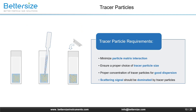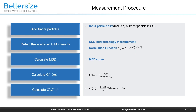When performing DLS microrheology measurements, the choice of tracer particles is very important. A key requirement is to minimize particle-matrix interactions, since any significant physical or chemical interaction between embedded tracer particles and their surroundings may alter the local environment and affect diffusivity. The tracer size used can have a significant effect on extraction of rheological parameters, and appropriate tracer concentration must be considered for good dispersion so that the scattered signal is dominated by the tracer particles. For the B-nano series, the first step is to input the particle size of the tracer particle; the instrument then measures scattered light intensity to obtain the correlation function and MSD curve, from which rheological information such as G-star, G-prime, G-double-prime, and Eta-star can be extracted.